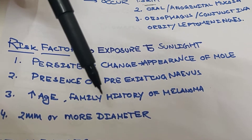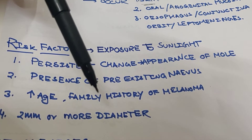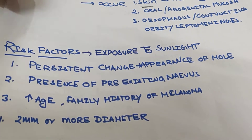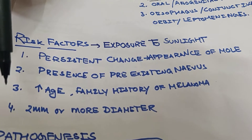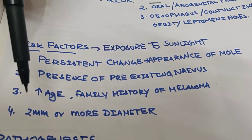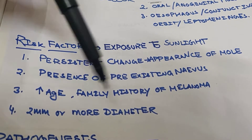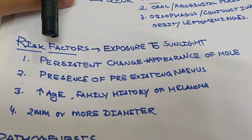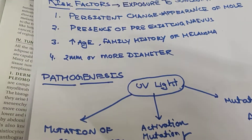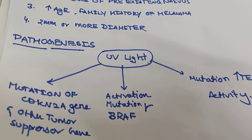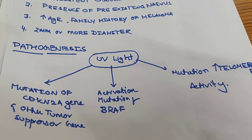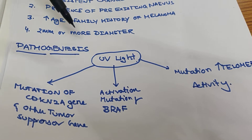The risk also increases with increasing age and a family history of melanoma. Additionally, whenever the diameter of a mole increases, the risk of malignant melanoma increases.